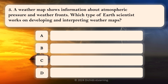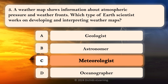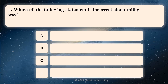A weather map shows information about atmospheric pressure and weather fronts. Which type of earth scientist works on developing and interpreting weather maps? C. Meteorologist.